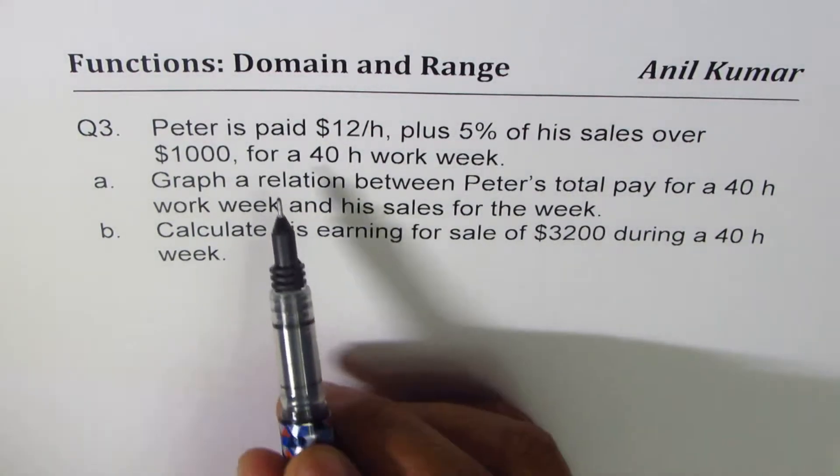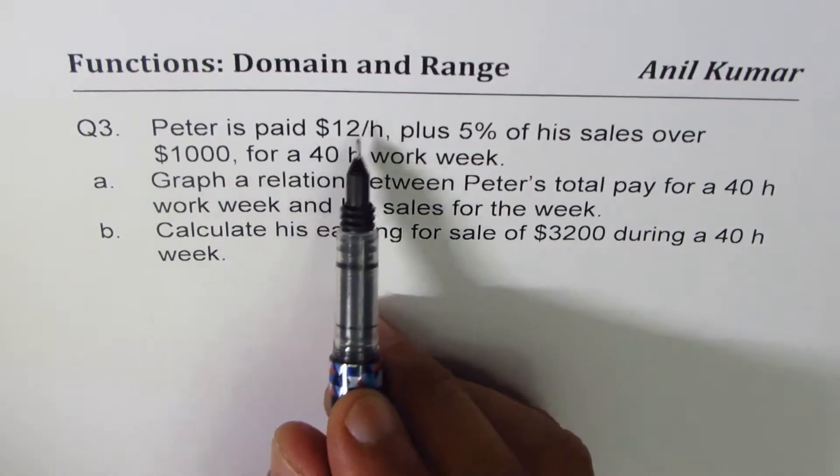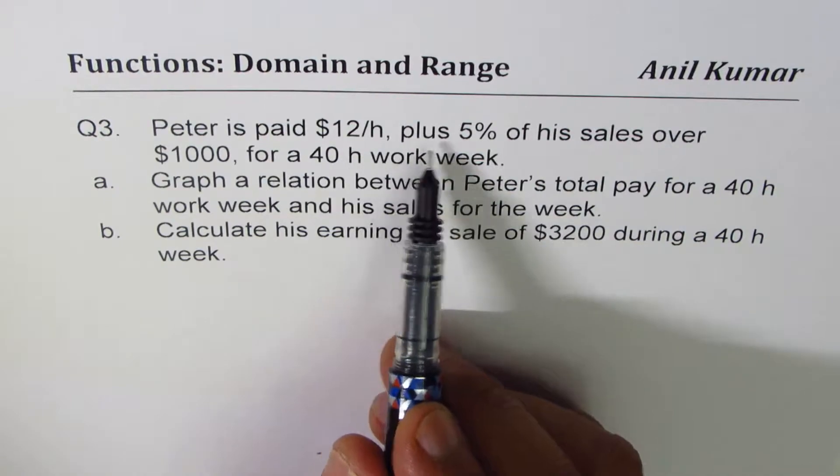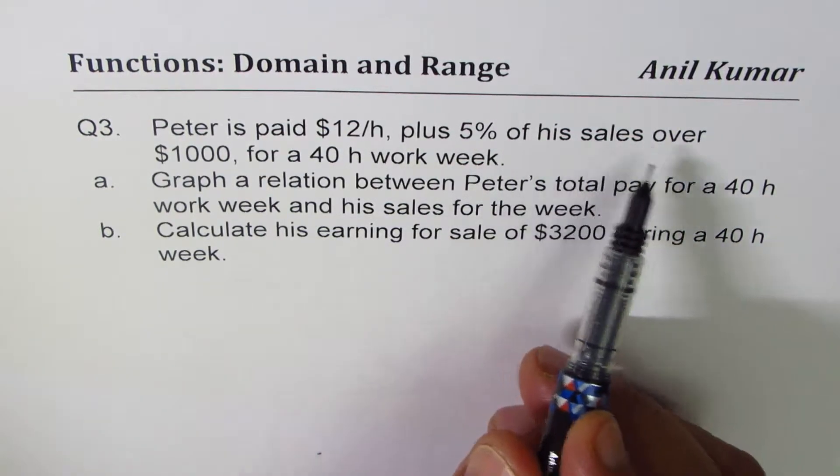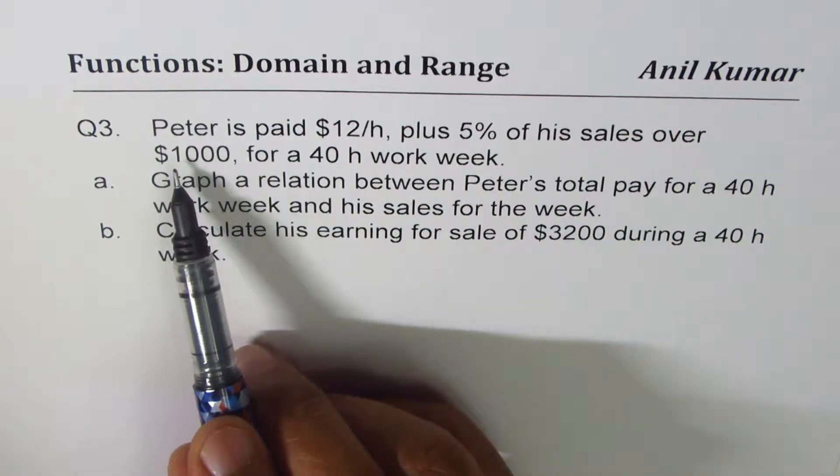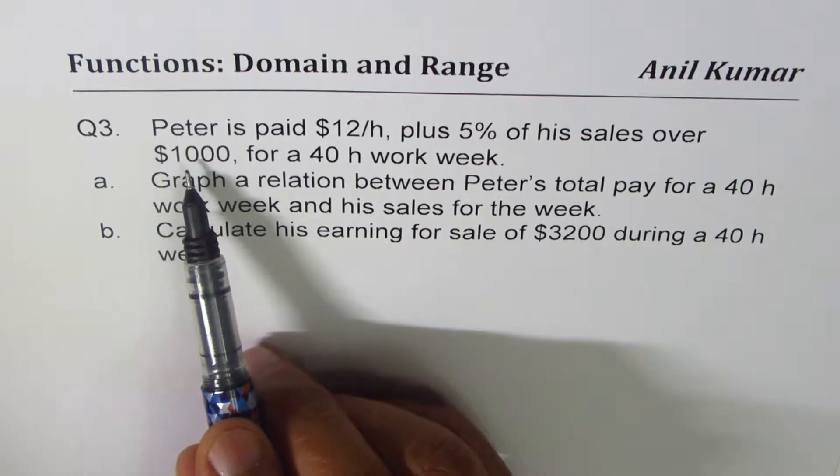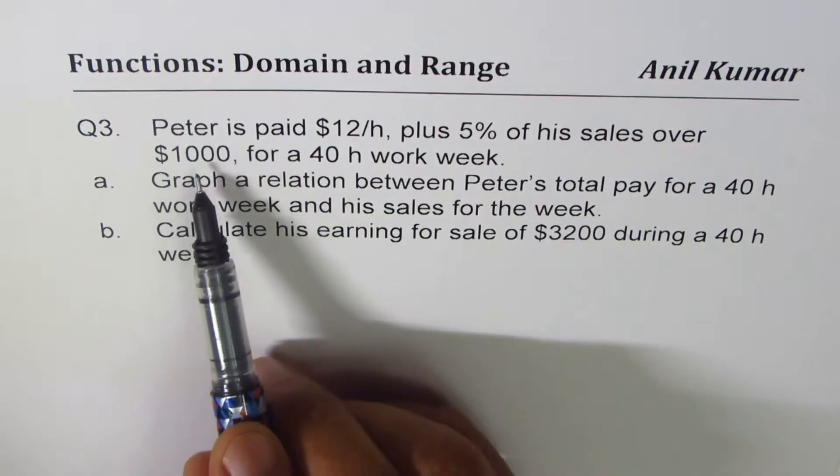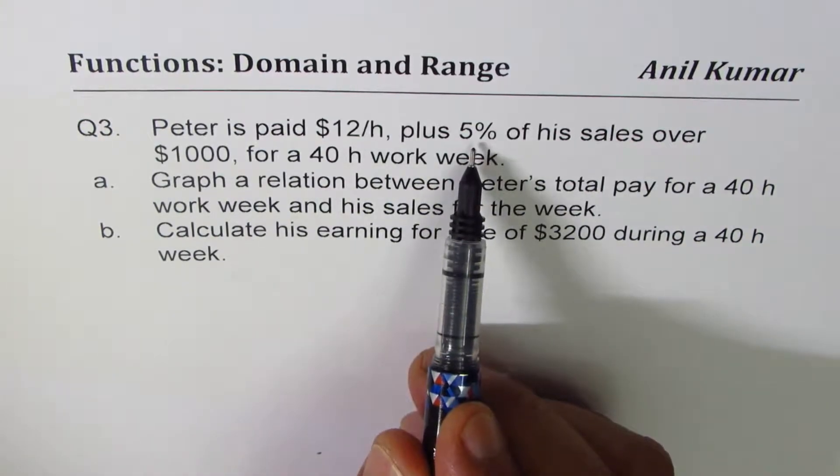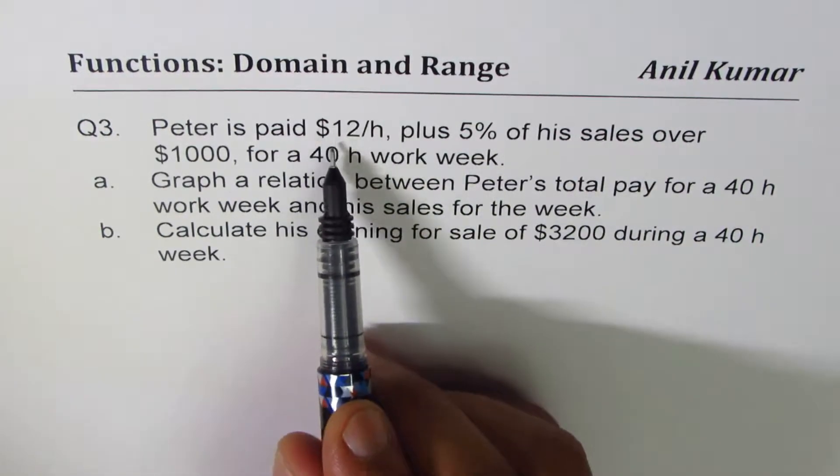Let's understand this. It says Peter is paid $12 per hour plus 5% of his sales over thousand. So if the sales is up to thousand, including thousand, in that case he doesn't get 5%. He only gets $12 per hour for a 40-hour work week.